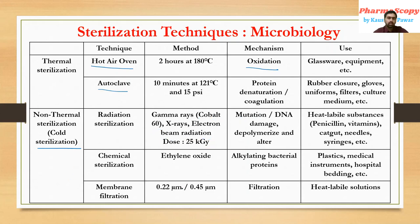The last technique is membrane filtration. There are two filters which can be used: a 0.22 micron filter and a 0.45 micron filter. Both can be used to sterilize different materials. Membrane filtration is also used for heat-labile solutions or injections, as thermal sterilization would cause degradation. It acts by a filtration mechanism.